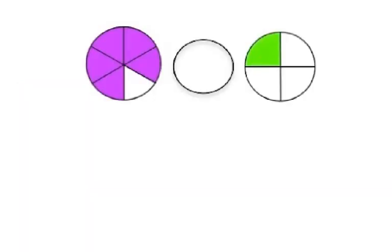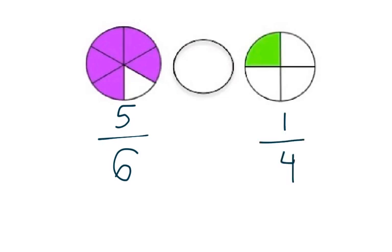So, let's compare these two fractions. Let's identify them. I see the first fraction has a unit fraction of 1 sixth, so my denominator is going to be a 6, and there are 5 pieces that are shaded. If I look at my other fraction, I see 1 piece is shaded and there are 4 total pieces in the whole, so that fraction is 1 fourth.